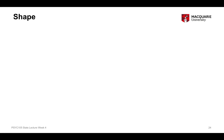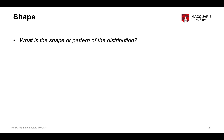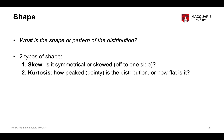The third aspect of summarising data, particularly for numeric data, is the shape of the data — what is the pattern or the kind of picture of the data as a whole? We talked about typicality first, then variability, and now we're on to shape. Shape is thinking about the shape or pattern of the distribution of the spread of scores, and there are two kinds of ways we can think about shape.